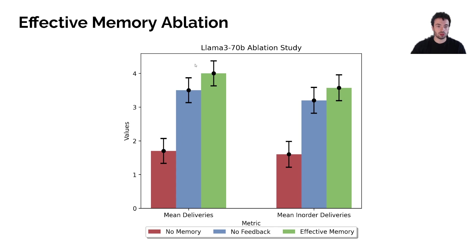With memory alone, performance improves much more to about 3.5 dishes per game. And with feedback and memory combined, we get even better performance of around four dishes per game, which is actually human-level performance.